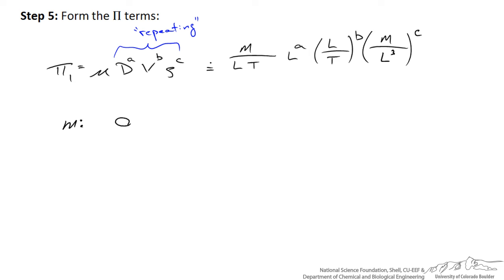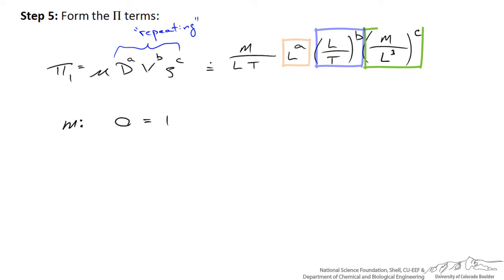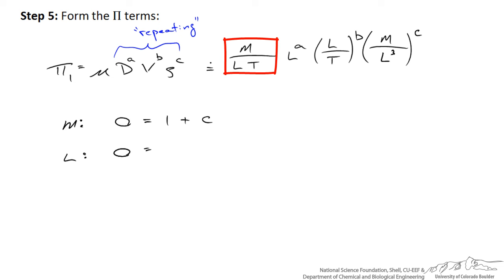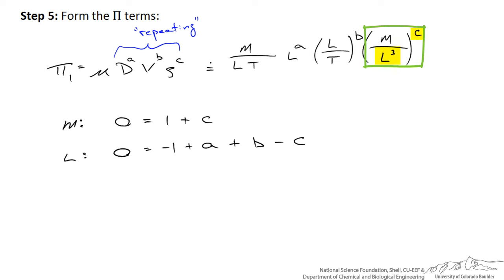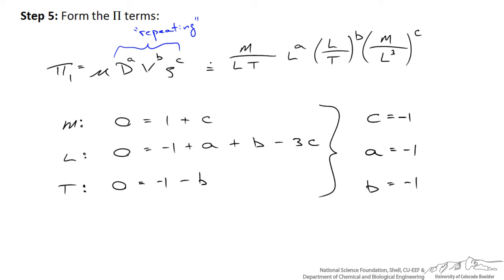Looking at mass: we want mass to the zero power in the pi term. Viscosity contributes mass to the 1, and density contributes mass to the c power, giving us 1 + c = 0. For length: viscosity contributes length to the negative 1, diameter gives length to the a, velocity gives length to the b, and density gives length to the negative 3c — so negative 1 + a + b − 3c = 0. For time: negative 1 minus b = 0. Solving these three equations: c = −1, a = −1, and b = −1. So pi 1 equals viscosity divided by the product of diameter, velocity, and density.